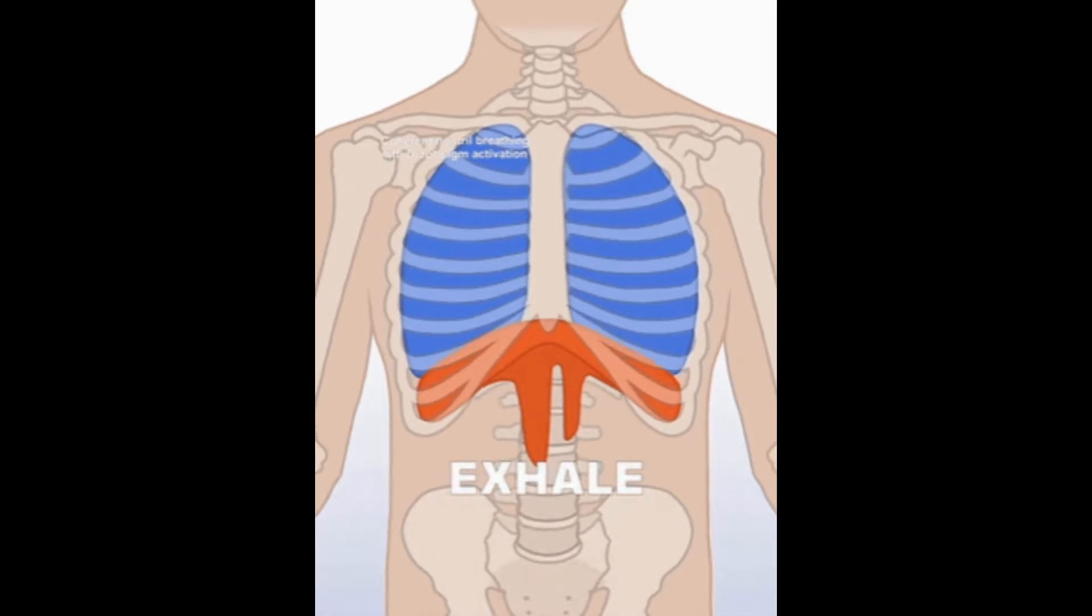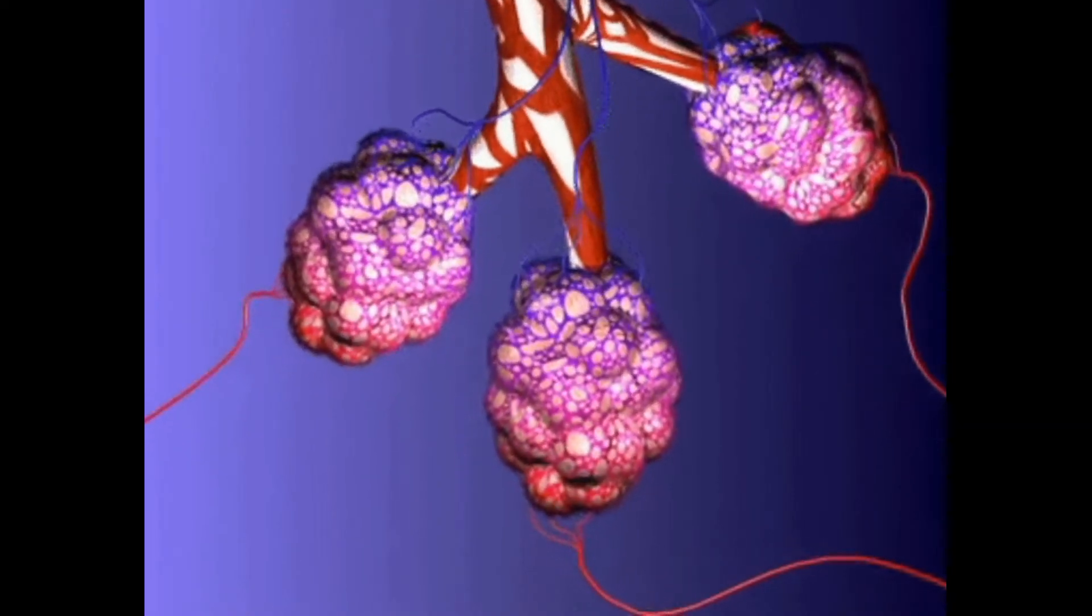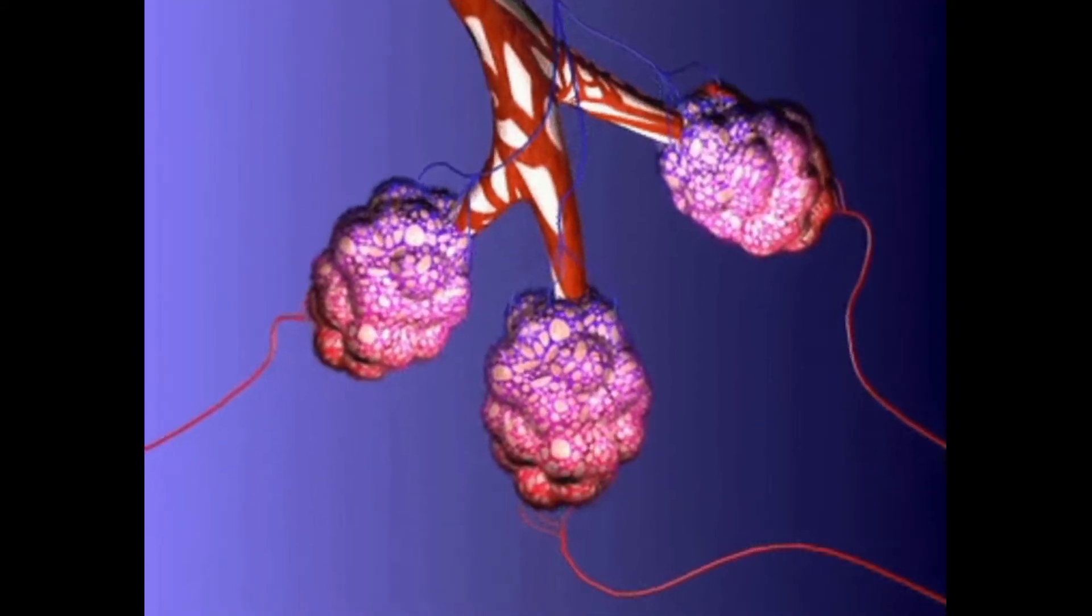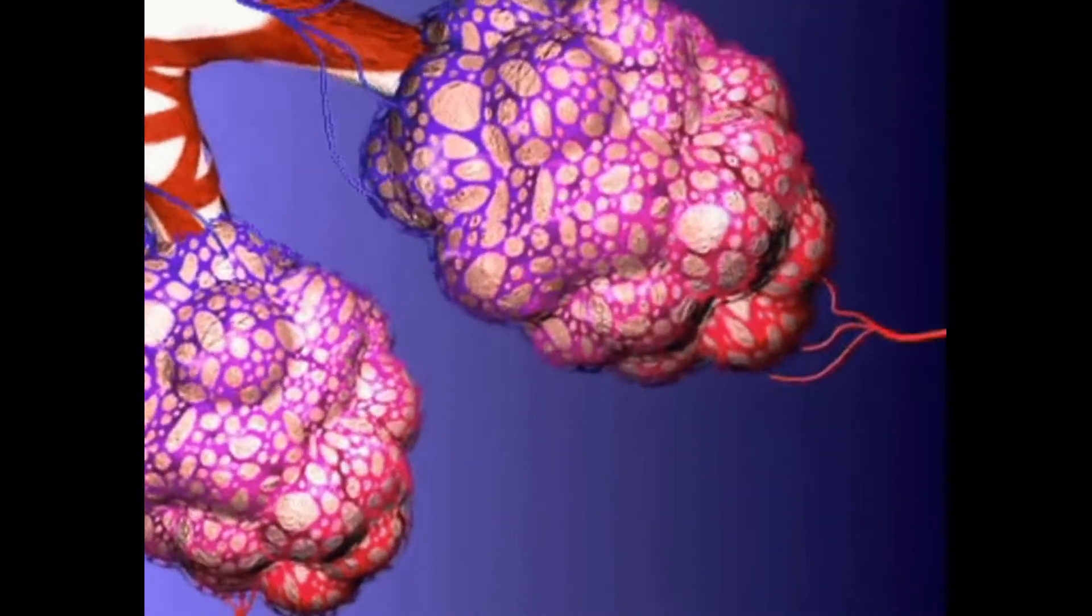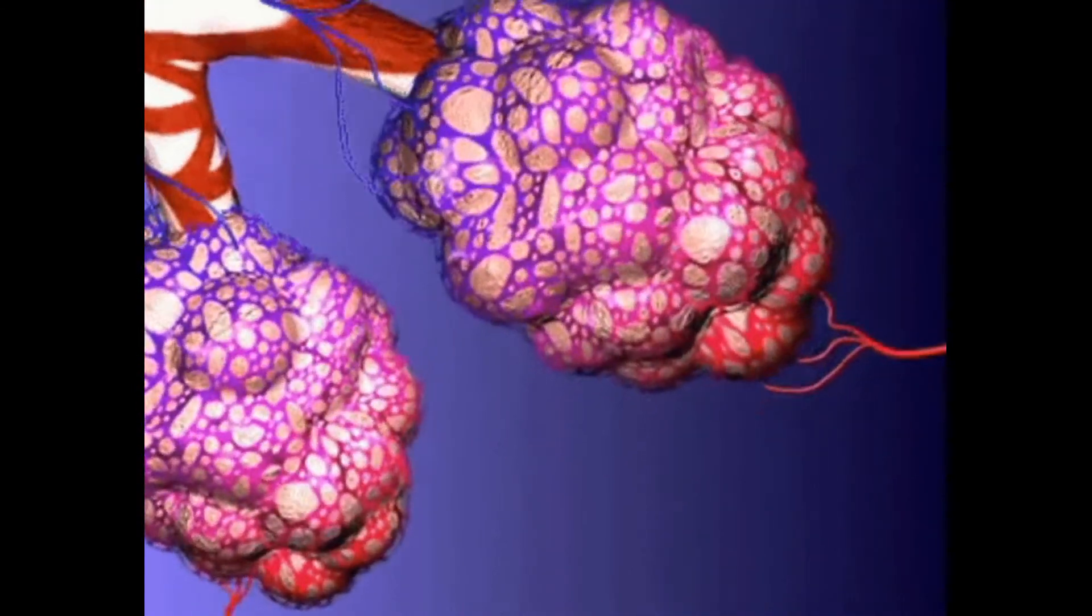The pneumotoxic center is located in the dorsal part of the pons varoli. It sends signals to all neurons of the dorsal respiratory group and only to inspiratory neurons of the ventral respiratory group. Its main job is to limit inspiration.